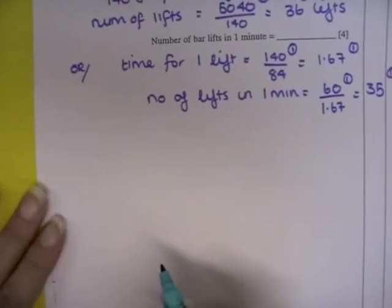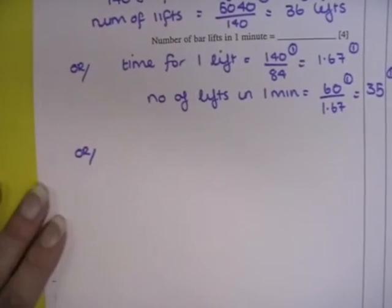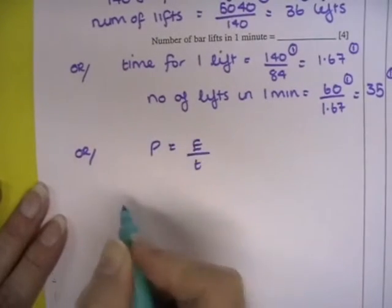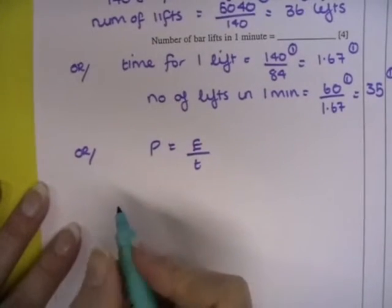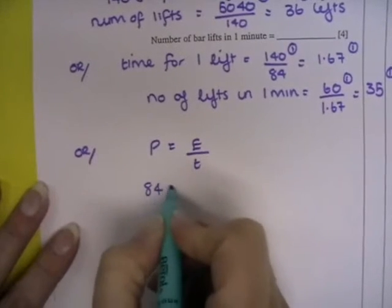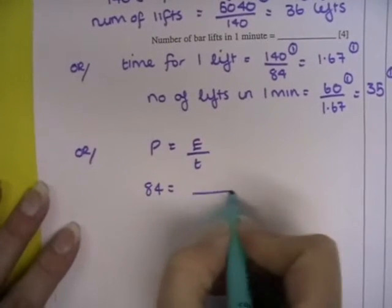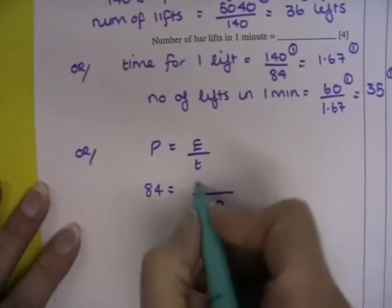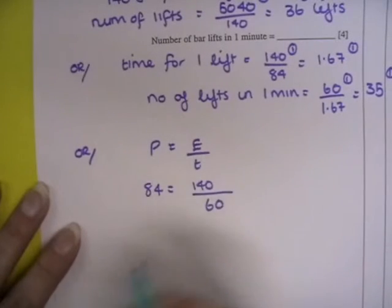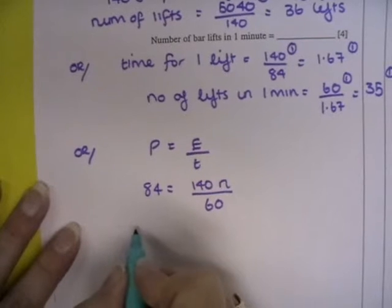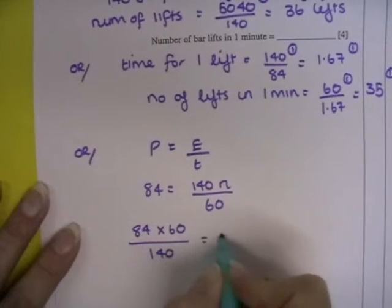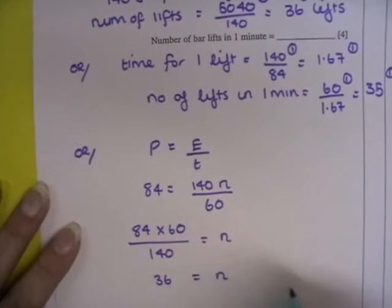There is a third method for doing this, in case you've used it. Power equals energy over time. This is a more mathematical method. The power was 84 watts, the time was 60 seconds, and the energy used up in that time was 140 joules per lift times n lifts. So then what we could say is 84 times 60 divided by 140 gives you n. So 36 is n.